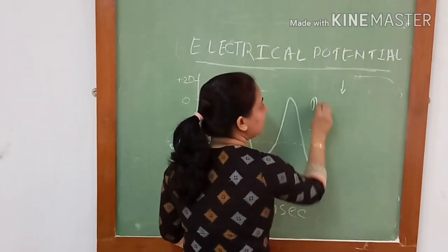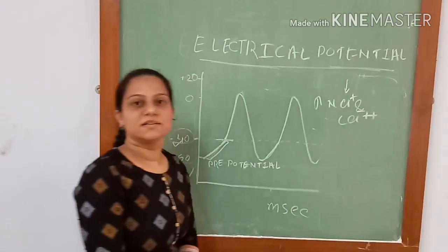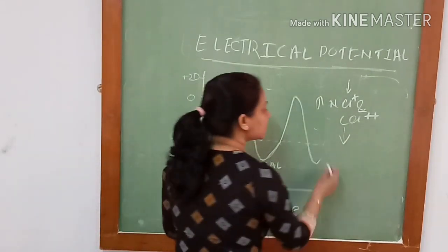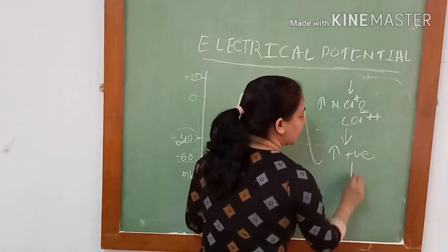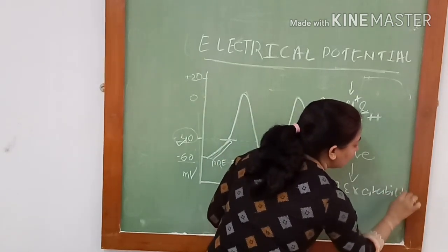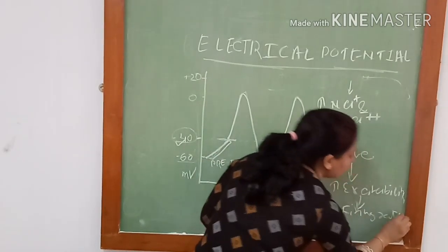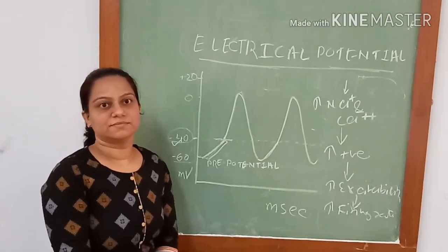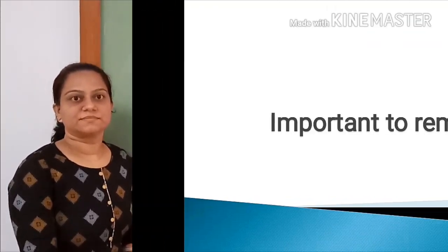Sympathetic stimulation will increase sodium and calcium conductance inside the cell. Due to entry of sodium and calcium inside the cell, it increases the positivity inside the cell. Thus, it increases the excitability of the tissue, increasing the firing rate and the rate of impulse discharge from the SA node. This is how sympathetic and parasympathetic innervation affects the heart rate.